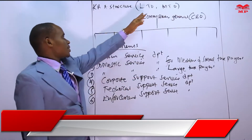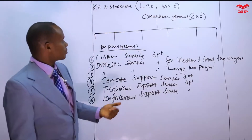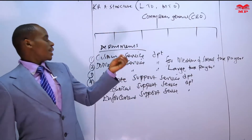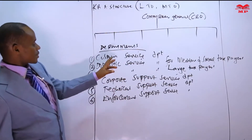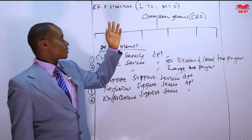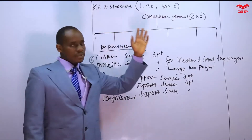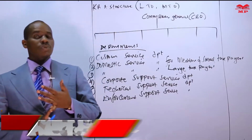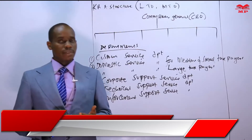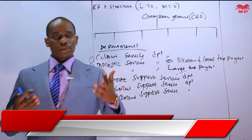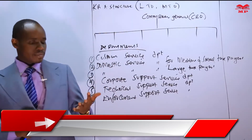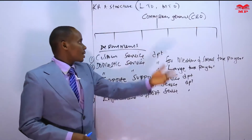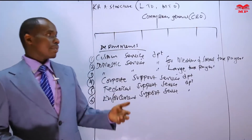LTO simply means Large Taxpayer Office. It is related to the Domestic Service Department for large taxpayers — this is where this office is located. It is simply an office for dealing with the matters of large taxpayers. The matters affecting large taxpayers include issues to do with income tax and also VAT. In Kenya, income tax and VAT contribute a lot out of total tax revenue. So for large taxpayers, we have created the Large Taxpayer Office.